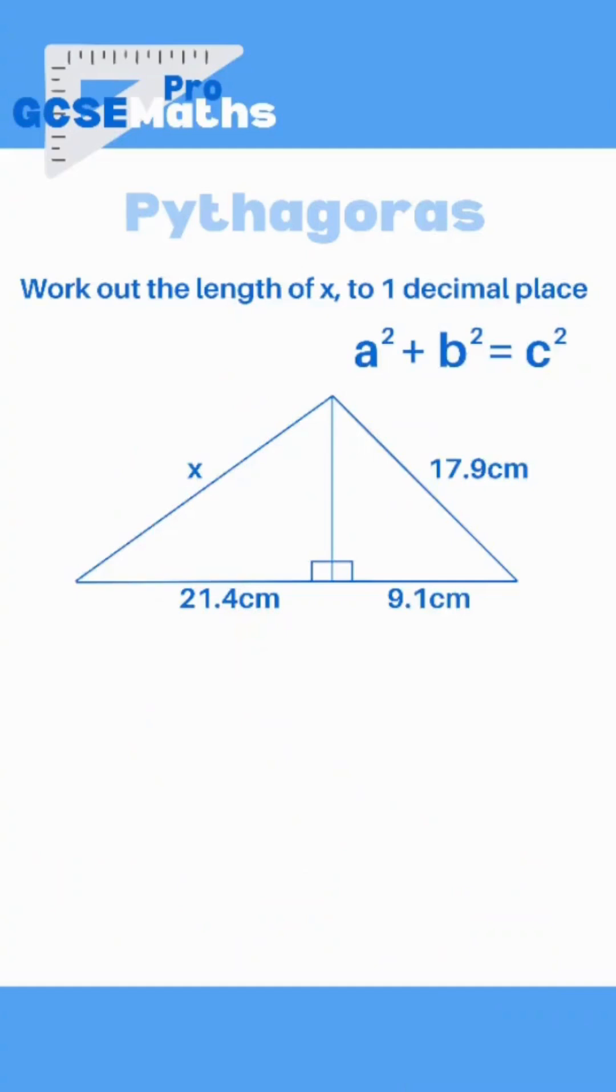For Pythagoras' theorem we normally have to use it when we're given a right-angle triangle. We've got two sides and then we have one missing. In this case it's a much harder question because we've got two right-angle triangles stuck together.